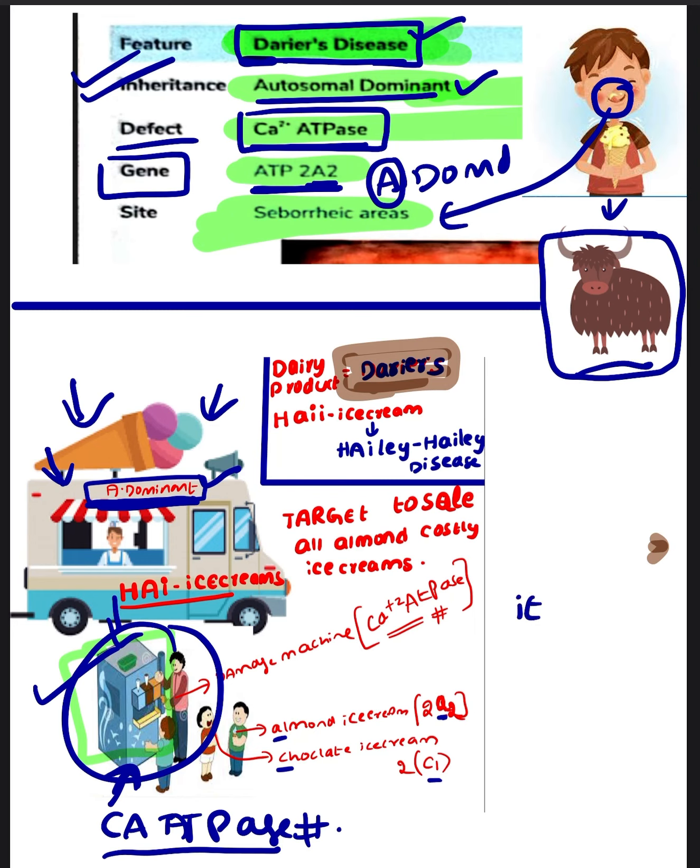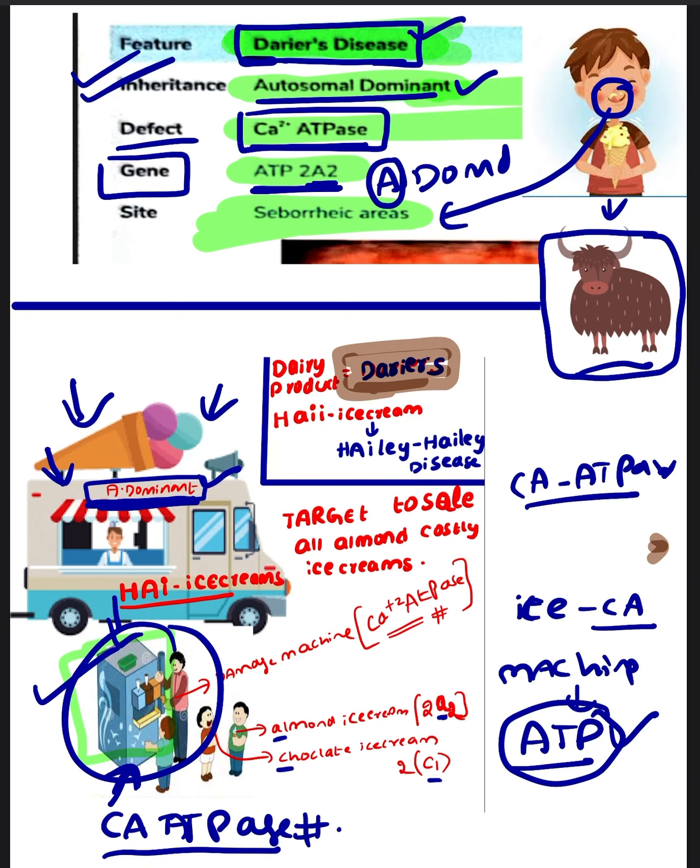Now here, the problem is with this ice cream pump. Ice cream means it's calcium, and the mission is ATP, which gives energy to the whole pump. So it's the ATP in our body that gives energy. I remembered calcium ATPase pump for this ice cream mission. This is damaged in Darier's disease.